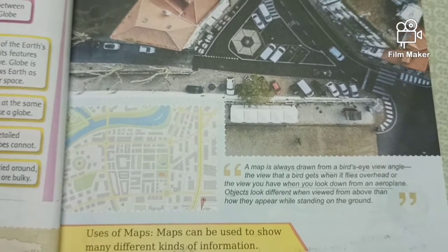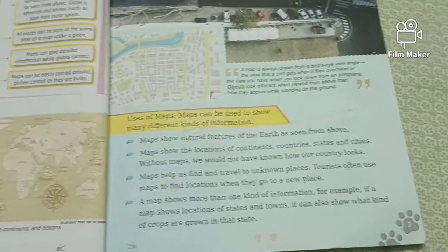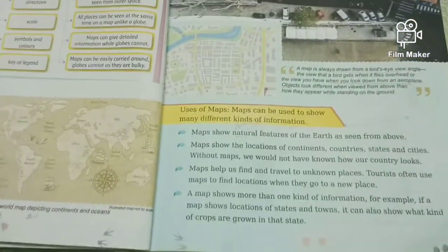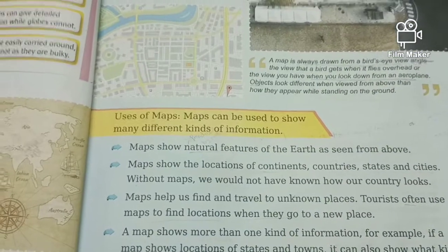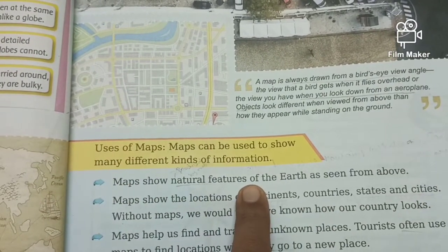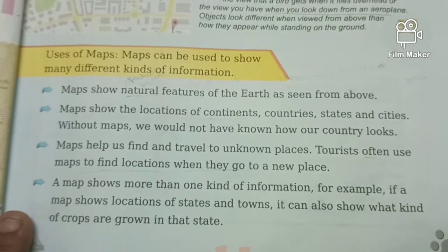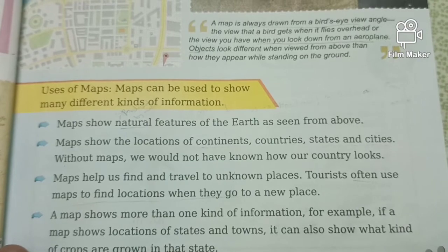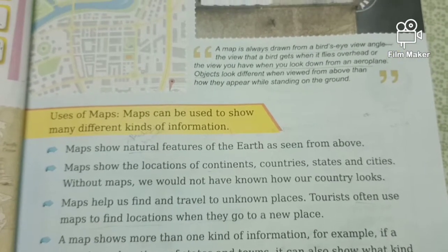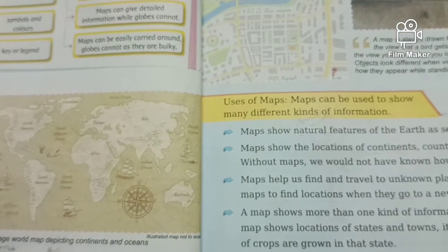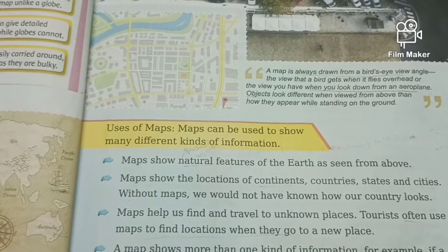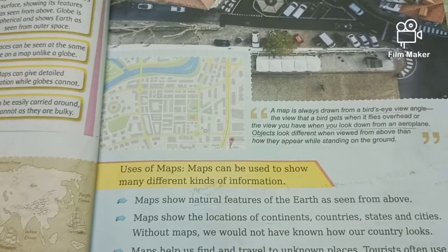Let us discuss the uses of maps. By using maps, we can show different kinds of information. Maps show natural features — that means features produced by nature. Maps show the locations of continents, countries, states, and cities. In page number 2, this is the world map. Here you can observe all 7 continents and easily locate them — for example, this is Asia, this is Africa.